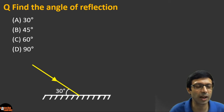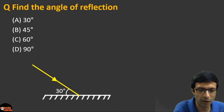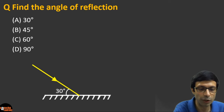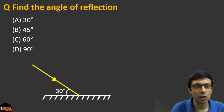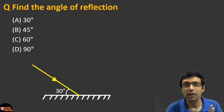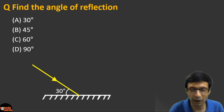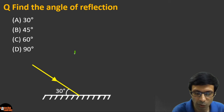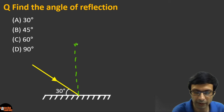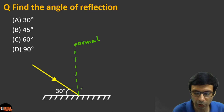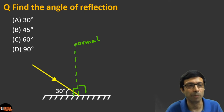Let's analyze this question. One really important thing to remember: the angle of incidence and the angle of reflection are always measured with the normal. So first, we should draw our normal here. The normal is at 90 degrees to the mirror.